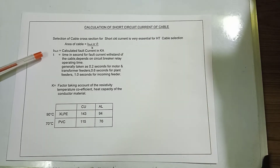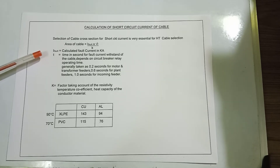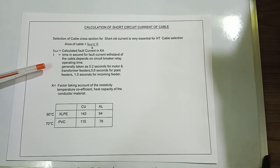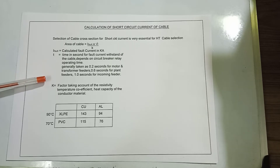t is the time in seconds for fault current withstand of the cable, which depends on the circuit breaker relay operating time. Generally taken as 0.2 seconds for motor and transformer feeders, 0.6 seconds for plant feeders, and 1 second for incoming feeders.